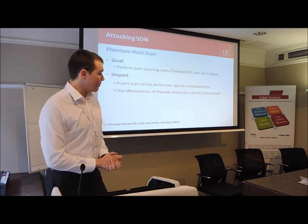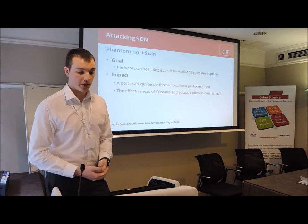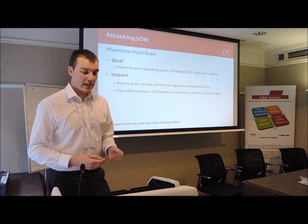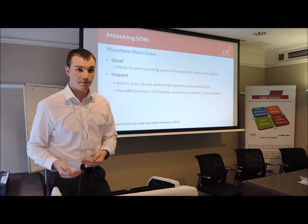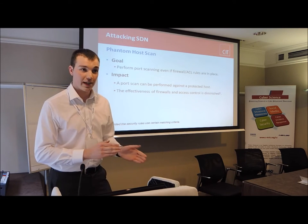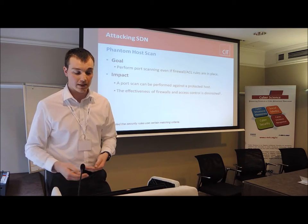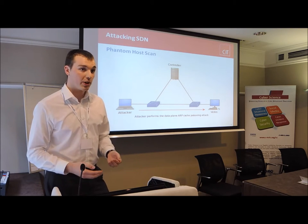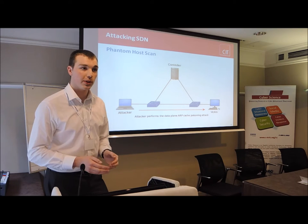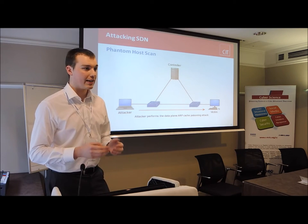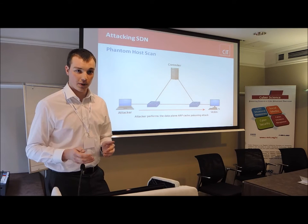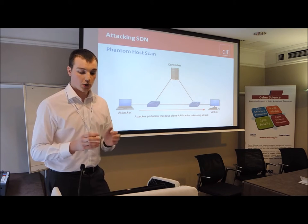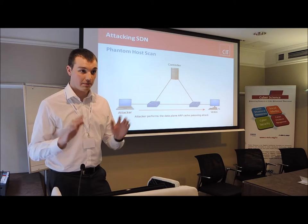The phantom host scan builds on this attack. The goal is to allow the attacker to perform port scanning of a target even if certain security rules are in place, diminishing the effectiveness of any firewall or access control rules. The attacker first performs the data plane ARP cache poisoning attack against the victim host, aiming to poison an entry in the victim's ARP cache and insert a MAC address which isn't actually in use in the network. By doing this, the attacker creates an IP and MAC address pair in the victim's ARP cache that doesn't correspond to any real host — this is the phantom host.